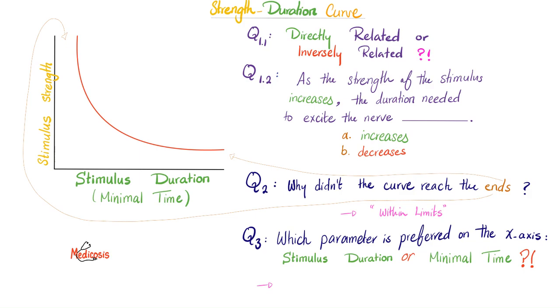Let's talk about the strength-duration curve. What's the first thing with any graph? What's on the y-axis and x-axis? We're talking about the relation between the strength of the stimulus and the minimal time needed to excite the nerve. From this graph, do you think this is directly proportional or inversely proportional? Any doofus will say inversely proportional. As the strength of the stimulus increases, the duration needed to excite the nerve decreases because they are inversely related. The duration decreased because they are inversely related. Easy peasy.